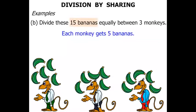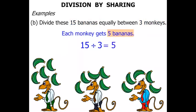So we have 15 bananas split up between 3 monkeys. We can write that as 15 divided by 3, and the answer equals 5.